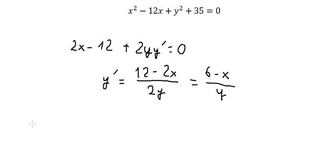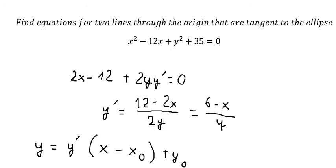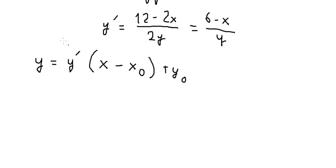Next, the formula for the tangent line is: y minus y-naught equals the first derivative of y evaluated at the point, multiplied by (x minus x-naught). The question asks for tangent lines that pass through the origin. The origin is the point (0, 0), so we substitute zero for both x and y in the formula.